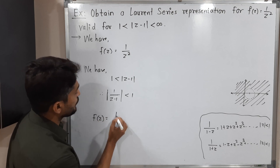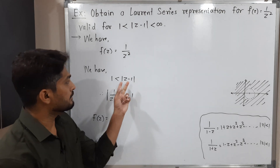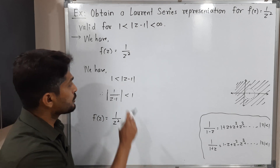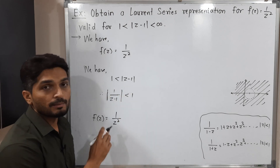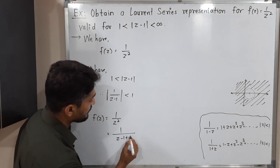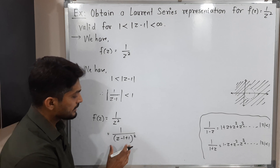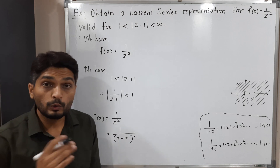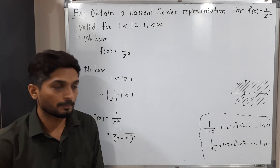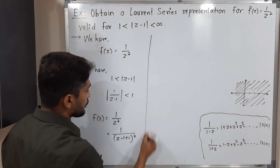Since inside the modulus we have z - 1, we always try to adjust that term in our series. Here we have z - 1, so we need to adjust z - 1 in f(z) = 1/z². We write z = (z - 1) + 1, so z² = ((z-1) + 1)². Also, as discussed in a previous video, whatever is in the denominator we should take it common — here z - 1 is in the denominator, so let us take it common.